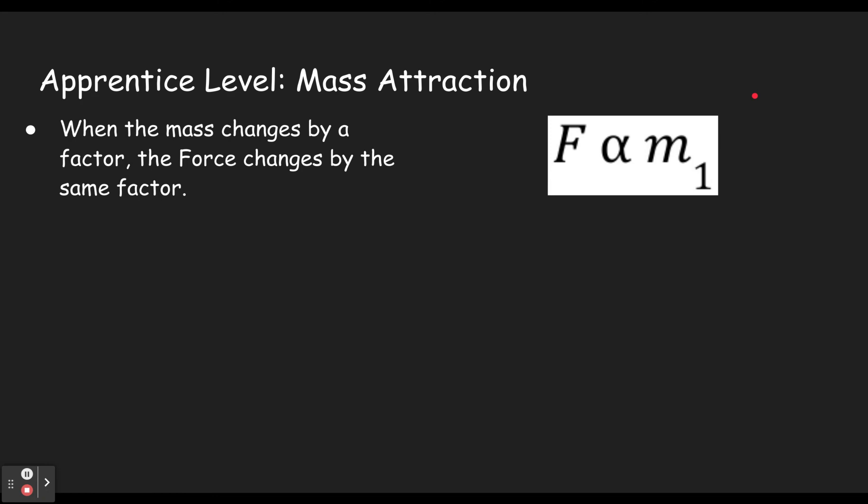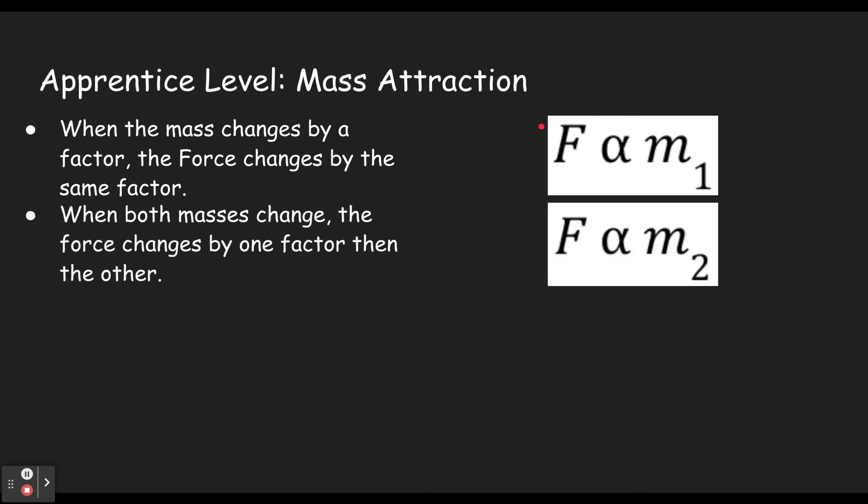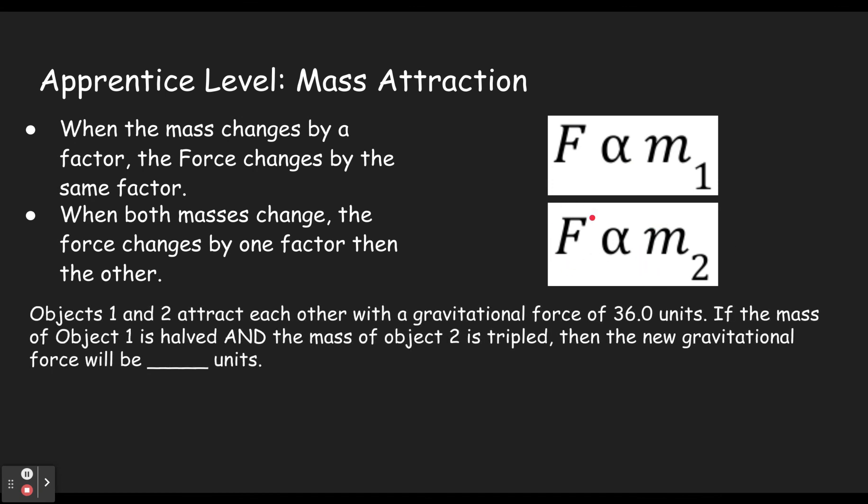So when the mass changes by a factor divided by six, the force changes by the same factor. The force would be divided by six. And if you have both things changing then just change it based on one and then change that based on the next one. Let's do an example where we have to change it twice. So we see objects one and two attract each other with a gravitational force of 36 units. If the mass of object one is halved and the mass of object two is tripled then the new gravitational force will be...